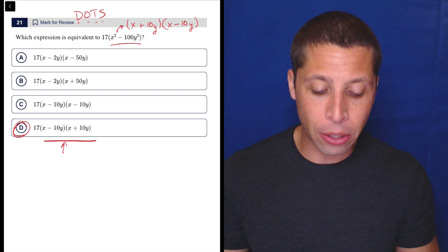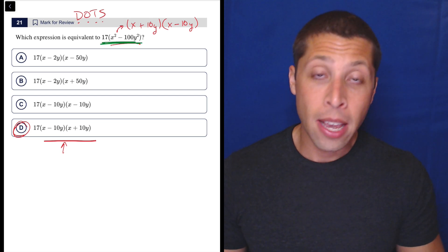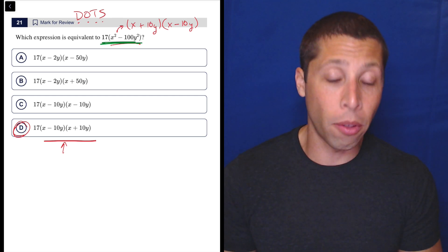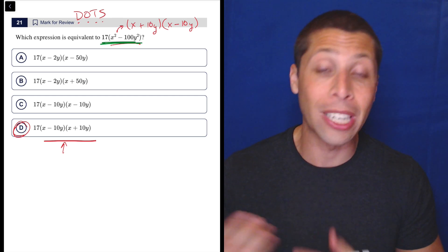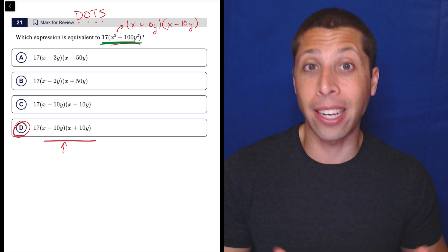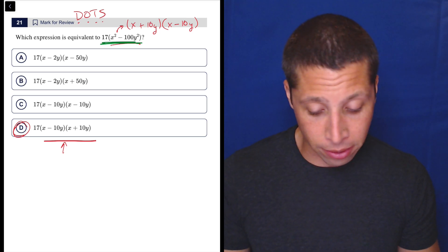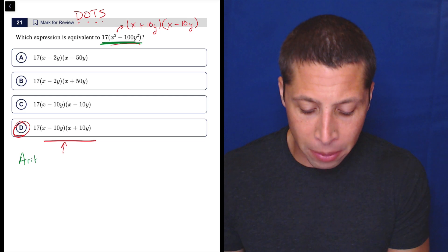We could go to Desmos, and we could type this in. It's going to give us some curve, and then we can compare that to all the other choices. And since these are supposed to be equivalent, we would hopefully get an equivalent curve for the right answer. But I'm going to show you another way, I think this is going to work. We can also arithmetize here.